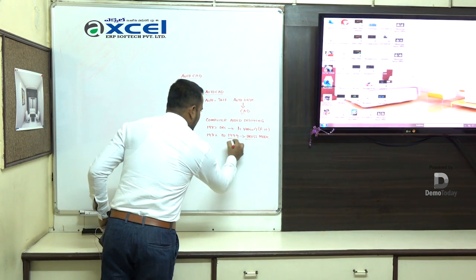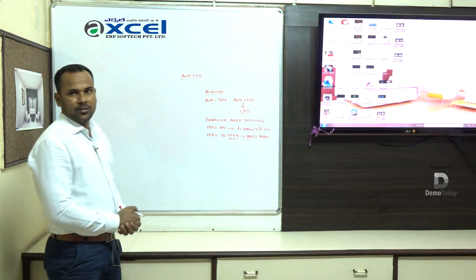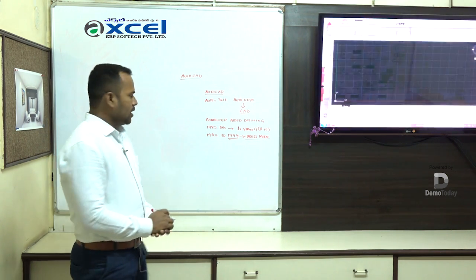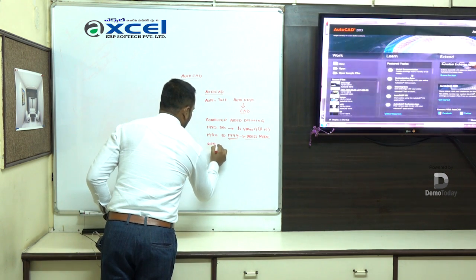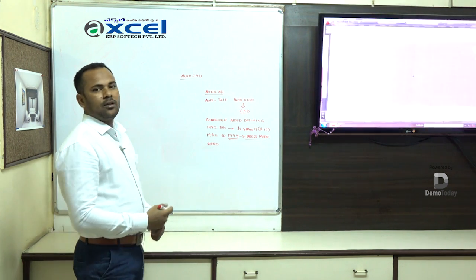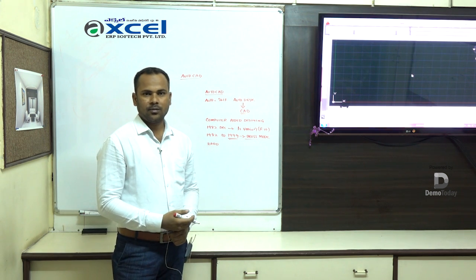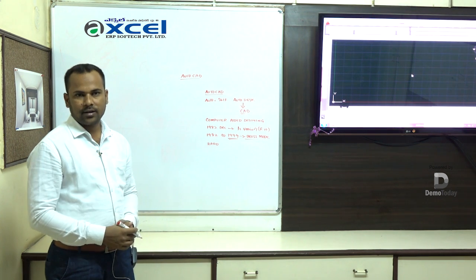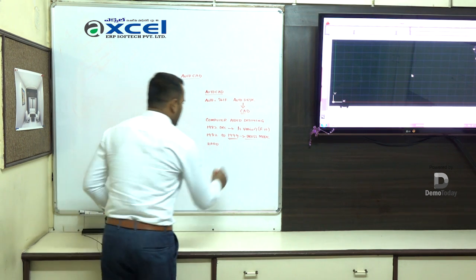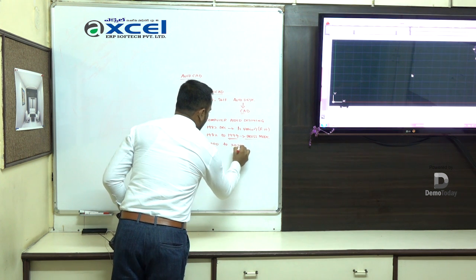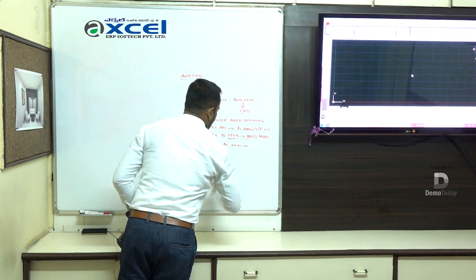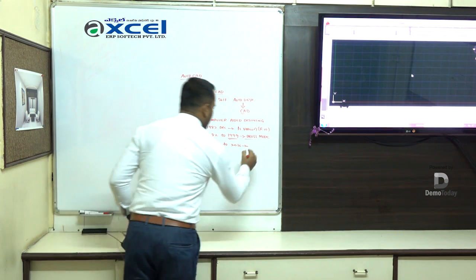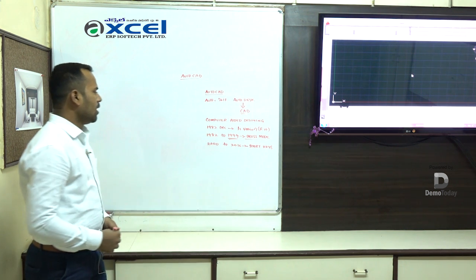The DOS mode system was there until 1999. In 1999, 3D was introduced. Then in 2000 when we entered the 2000 years, Windows XP entered and Microsoft software came. From 2000 onwards, we started using short keys. From 2002 to now 2016, we can use short keys.